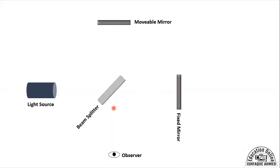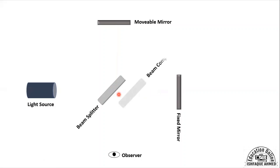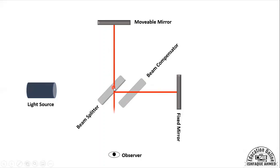To compensate for this path difference, we place a compensator plate. The beam coming from the movable mirror passes through this sheet of transmitting material, and so does the other beam, so both beams travel through equivalent media. Once both paths are equalized, we then decide based on the path difference whether the interference is constructive or destructive.